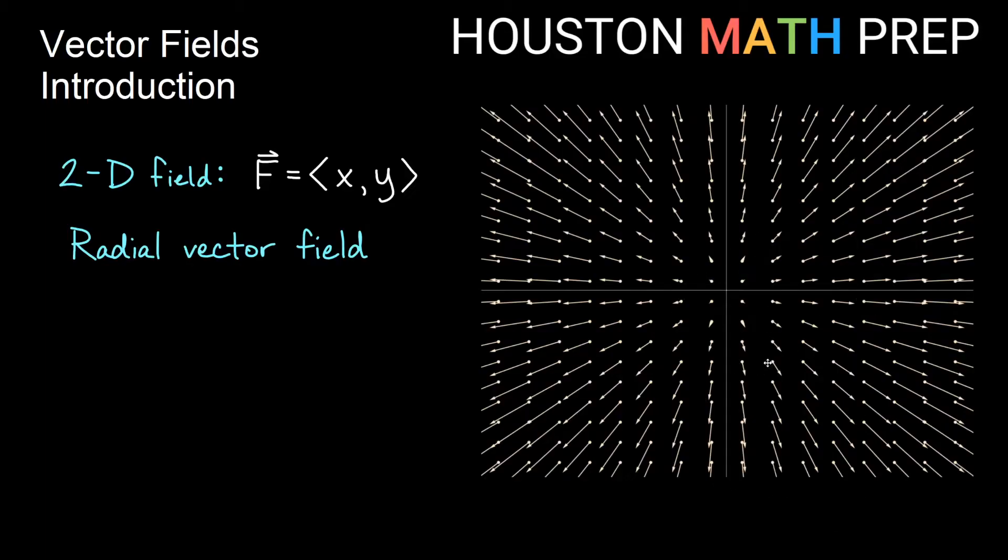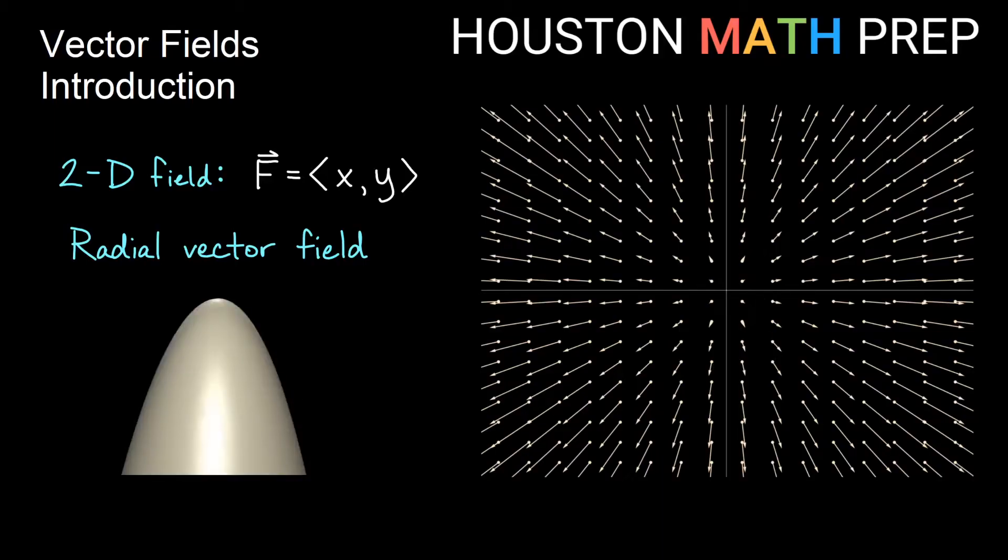If you want to imagine a physical phenomenon that might represent this, if you imagine we have some sort of paraboloid where I have a max at the top here, think about water that is running off of this paraboloid, in other words down a hill, might be represented by this type of field.